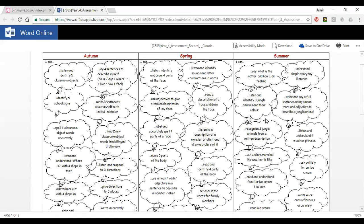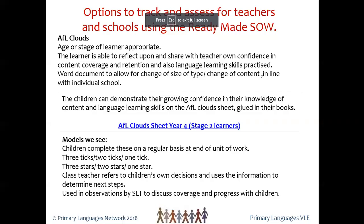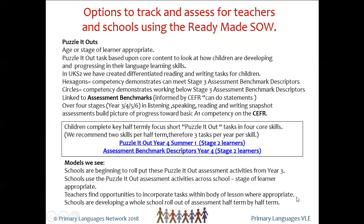I saw these used with Kate Kennedy at St Margaret's to great effect — she was using them to inform her next step. They were in year five, doing fruit and vegetables, and children had been very honest, putting three ticks, two ticks, one tick, or a question mark to indicate whether they felt confident or not. We think this is a very valuable way of having a dialogue with your pupils. So you've now got tracking sheets and assessment for learning sheets — the third option we've prepared for you are puzzle-it-outs.